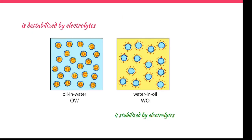In emulsion making, when you add an electrolyte to an oil-in-water emulsion, the emulsion is destabilized. Quite the contrary, a water-in-oil emulsion needs an electrolyte for stabilization. So this is another case where you really need to take care of electrolytes — in one case you need to add them for stabilization, and in the other case you need to remove or limit them so that your emulsion stays stable.